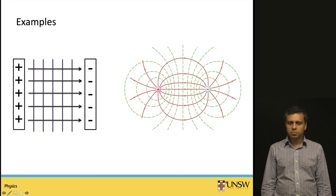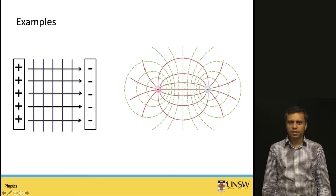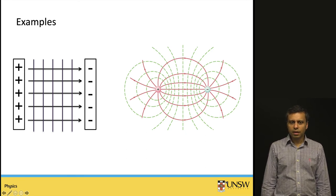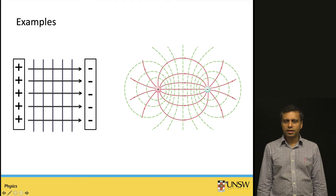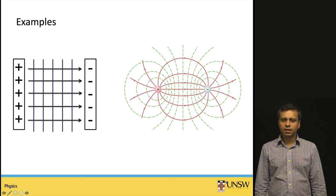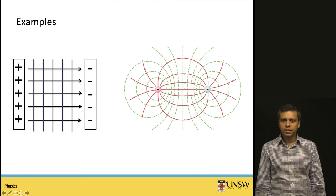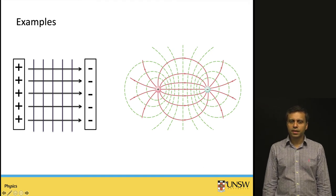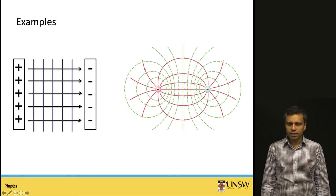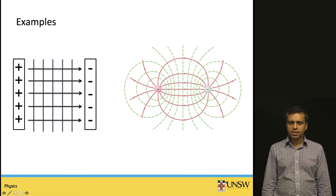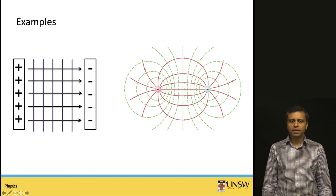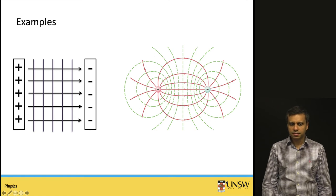The case of two point charges is also shown. Their equipotential lines are shown by green dotted lines, and note that these are perpendicular to the red lines which are the electric field lines.